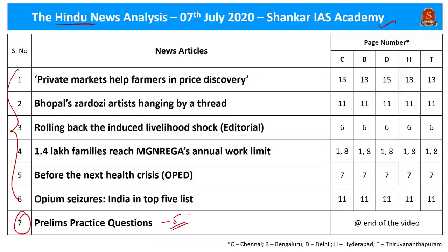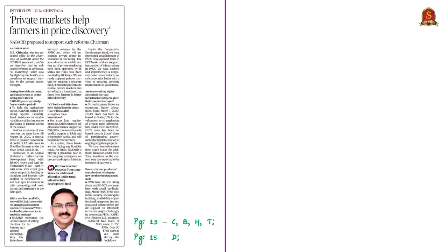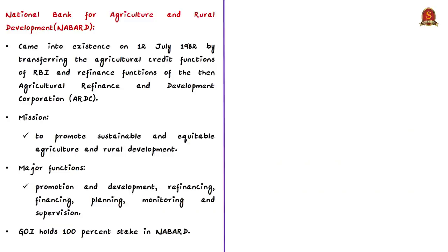Let us start the news analysis with this article. In this news article, many terms which we often see in news are discussed. We will discuss all these Agri-related terms in exam point of view. First, let us talk about NABARD or National Bank for Agriculture and Rural Development. It came into existence in 1982 by transferring the agricultural credit functions of RBI and refinance functions of Agricultural Refinance and Development Corporation. So the functions of two bodies are transferred into a single body, that is NABARD.